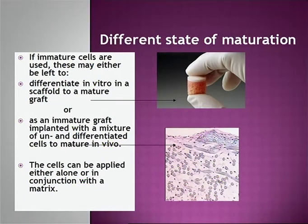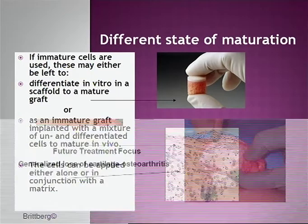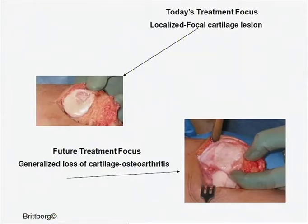The cells can be applied either alone or in conjunction with a matrix. We are mostly talking about local focal cartilage lesions, but there is a sliding scale into general loss of cartilage — osteoarthritis — and we have to treat these lesions also in the future with cell technologies.